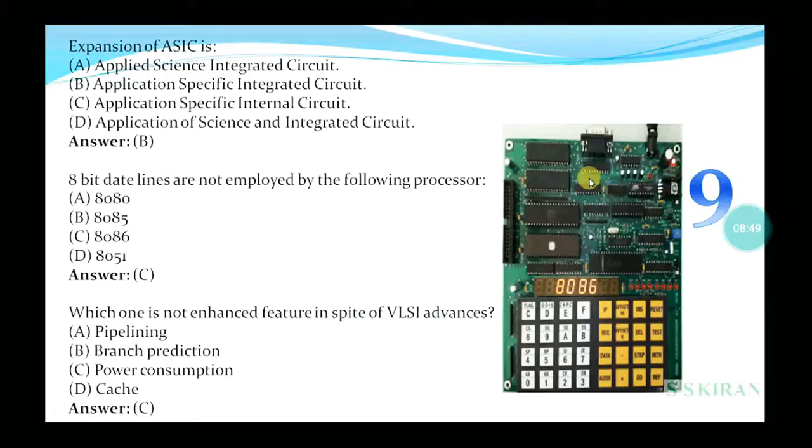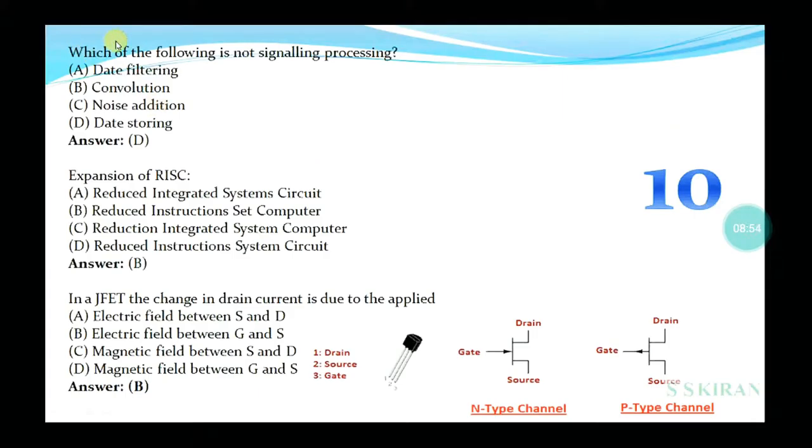Which one is not an enhanced feature in spite of VLSI advances: pipelining, branch prediction, power consumption, or cache? Option is C, power consumption. Which of the following is not signal processing: data filtering, convolution, noise addition, or data storing? The option is D, data storing. Expansion of RISC: Reduced Instruction System Circuit? No. Reduced Instruction Set Computer—yes. Reduction in Integrated System Computer? No. Answer is B, Reduced Instruction Set Computer.